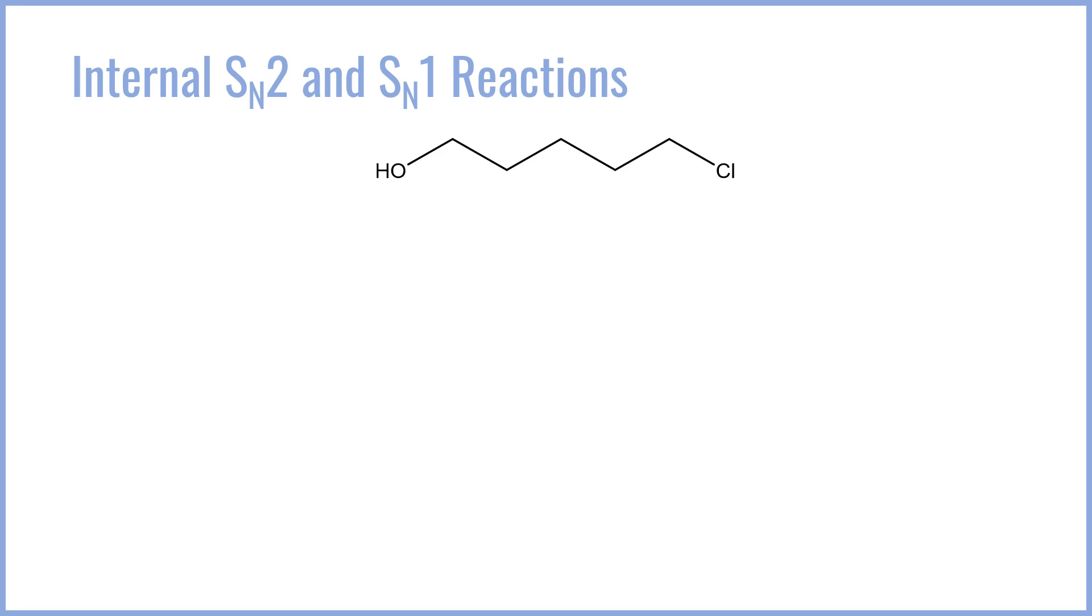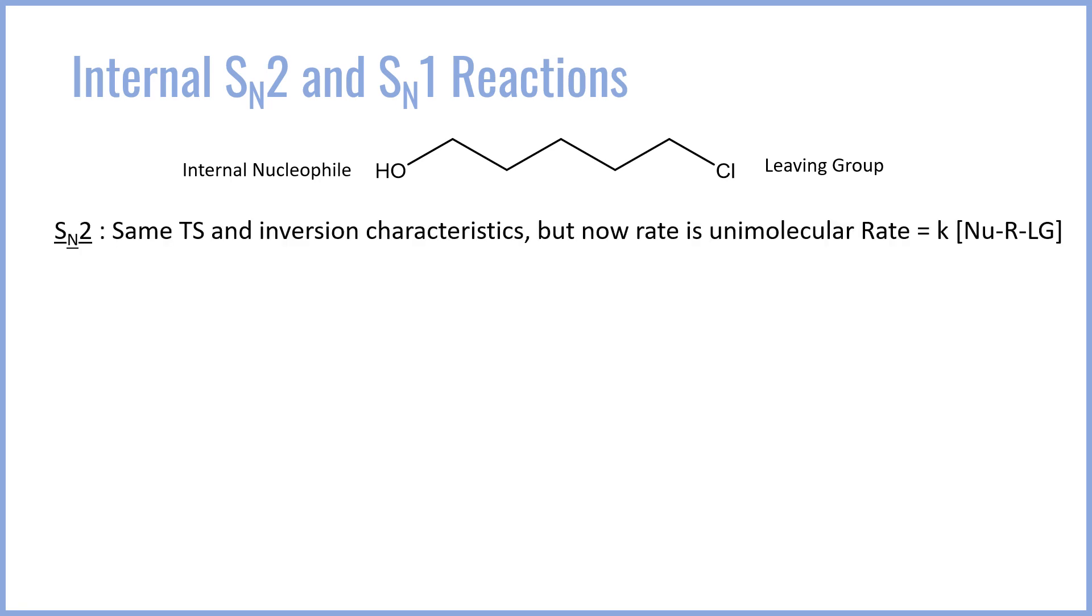Let's go ahead and look at some examples of what internal SN2 and SN1 reactions might look like. For example, consider this alcohol which also has a halogen attached towards the opposite end. In this case we want to be able to identify which is our leaving group and that is going to typically be the halogen. Conversely our internal nucleophile is going to be the OH. So anytime you see a molecule that has both an OH or an amine on the same carbon chain as a chlorine or another halogen, you want to think about the possibility of an internal SN1 and SN2. These are often asked as exam questions because they force you to think about the things you know of SN1 and SN2 but in a context you aren't familiar with. The SN2 goes through the same transition and has the same exact inversion characteristics for stereochemistry but now the rate is going to be unimolecular. The nucleophile is part of the leaving group and so instead of having a separate concentration for the nucleophile, the rate is only based on the concentration of the nucleophile and the leaving group.